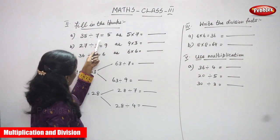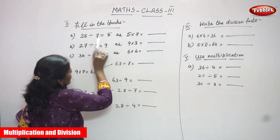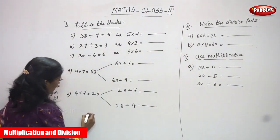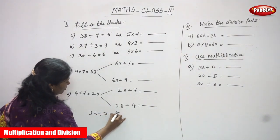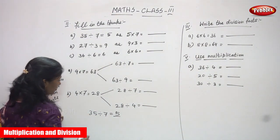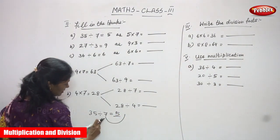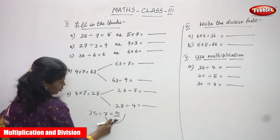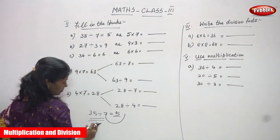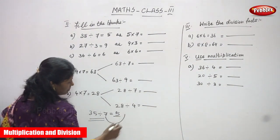35 is divided by 7, you can get 5. Now, 7 is in the division place — this is the dividend, this is the divisor, and this is the quotient. So this 7 is in the division place, and if it goes to the opposite direction it becomes multiplication.